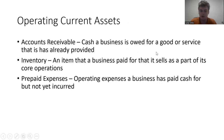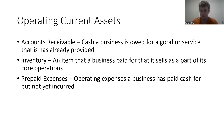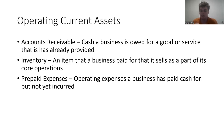Operating current assets include accounts receivable, inventory, and prepaid expenses. Accounts receivable is cash a business is owed for a good or service already provided — if I'm a lemonade stand and someone buys $20 of lemonade but says they'll pay next month, that's $20 of accounts receivable. Inventory is an item a business paid for that it sells as part of its core operations, liquidated into cash within a year. Prepaid expenses are operating expenses a business has paid cash for but not yet incurred — like paying an entire year's rent upfront.